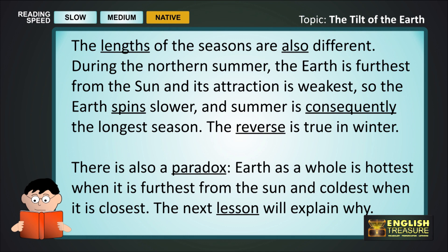The reverse is true in winter. There is also a paradox. Earth as a whole is hottest when it is furthest from the sun, and coldest when it is closest. The next lesson will explain why.